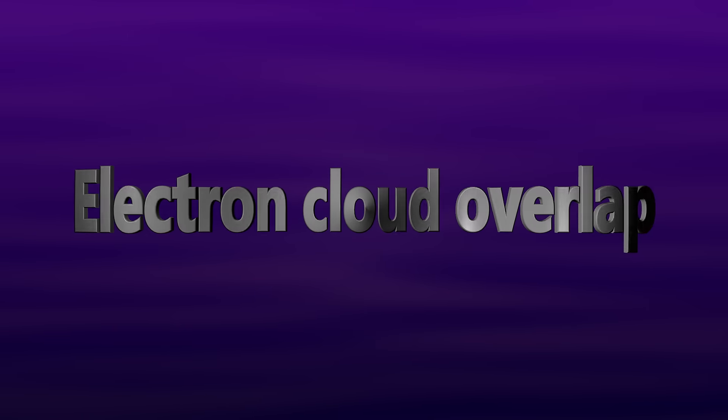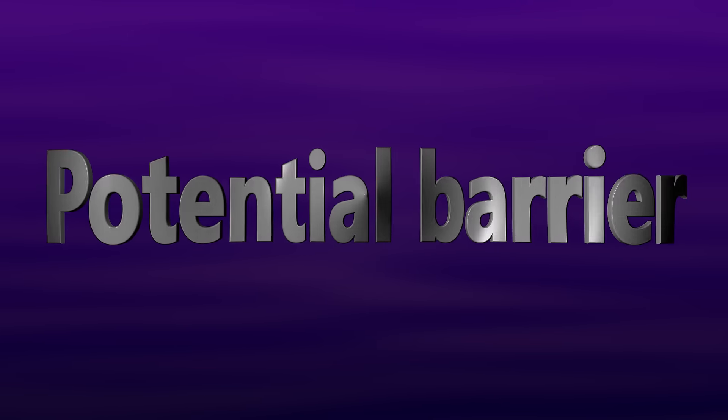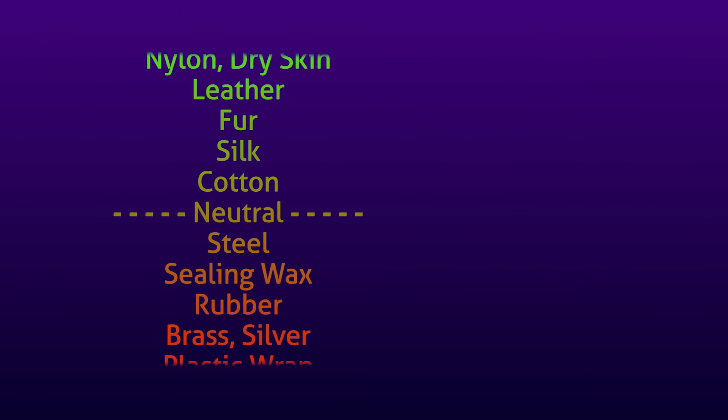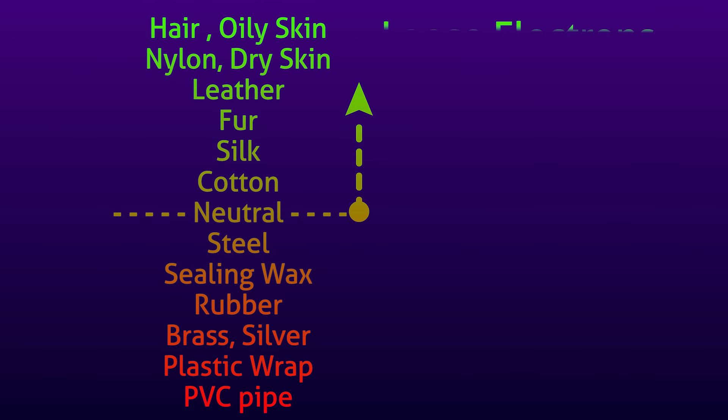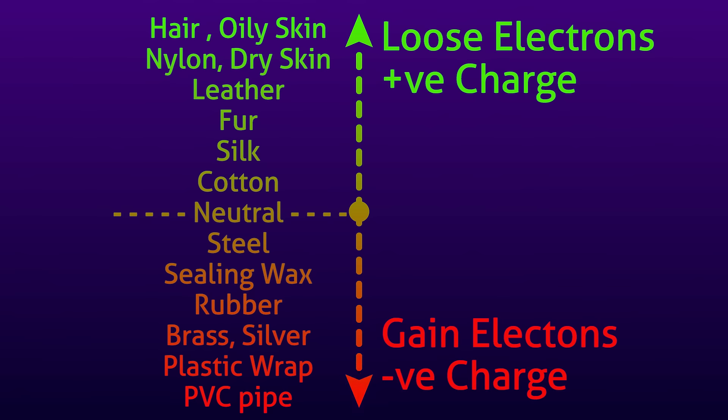But then nothing happened when I rubbed steel with cotton. Why? The reason is that based on the atomic sizes and strength of nucleus, certain materials have a high affinity to gain electrons and some tend to lose electrons while coming into contact. In this list, the materials appearing on top tend to lose electrons and those on bottom tend to gain electrons. The cotton and steel are here. That means they both have no tendency, so nothing happened.